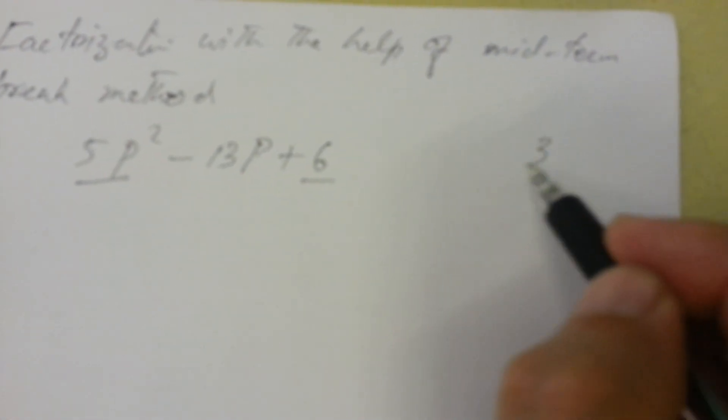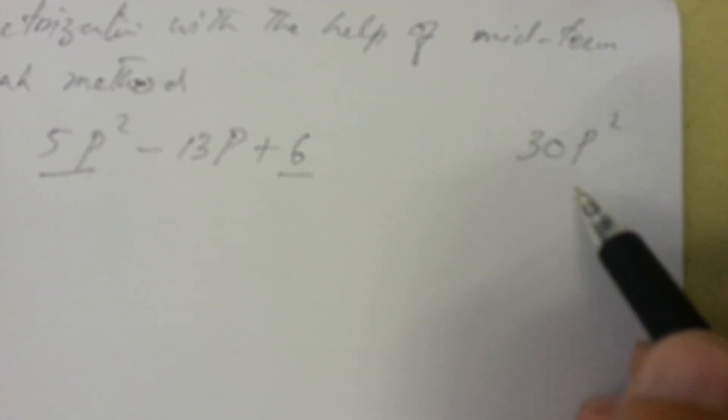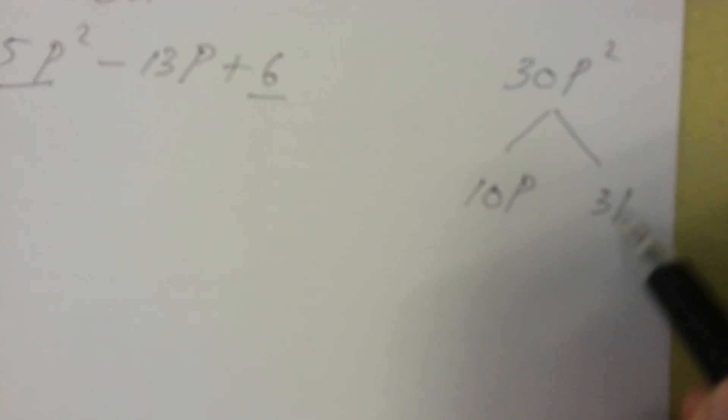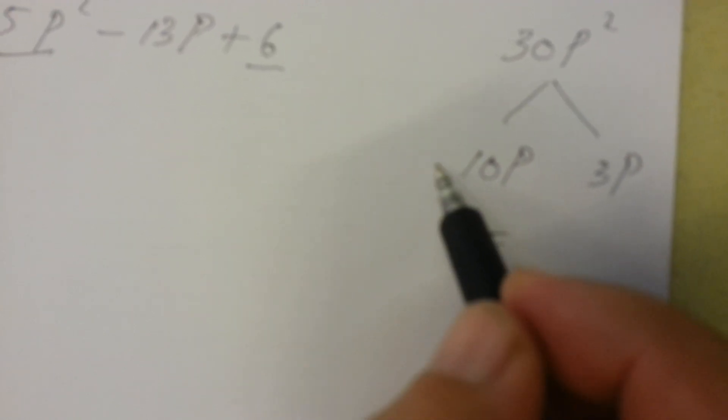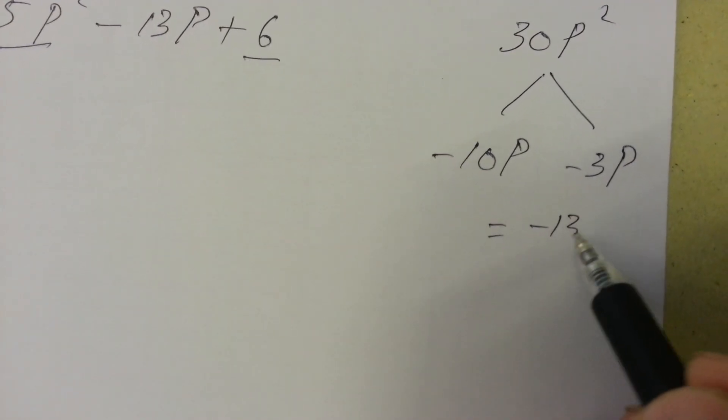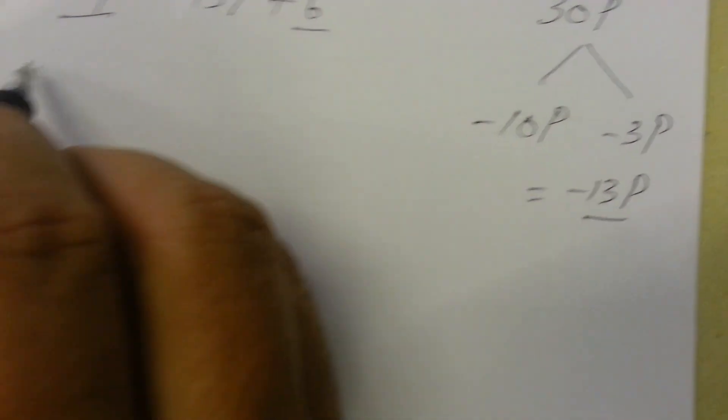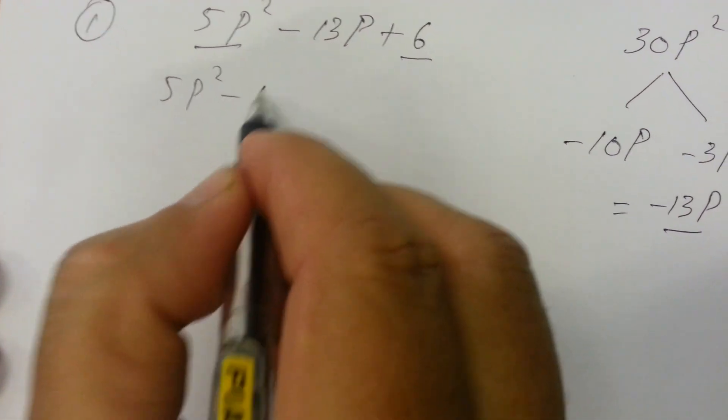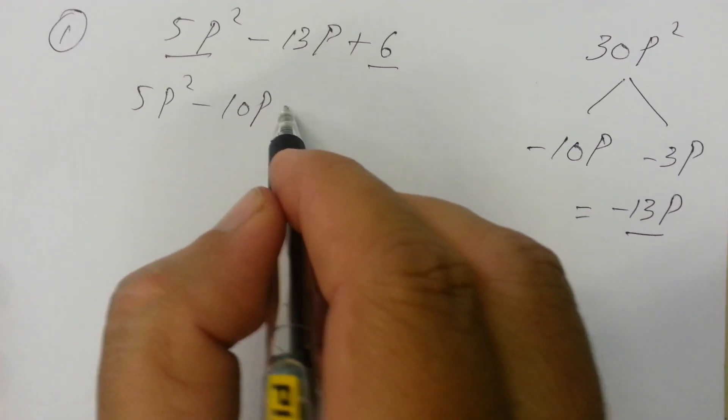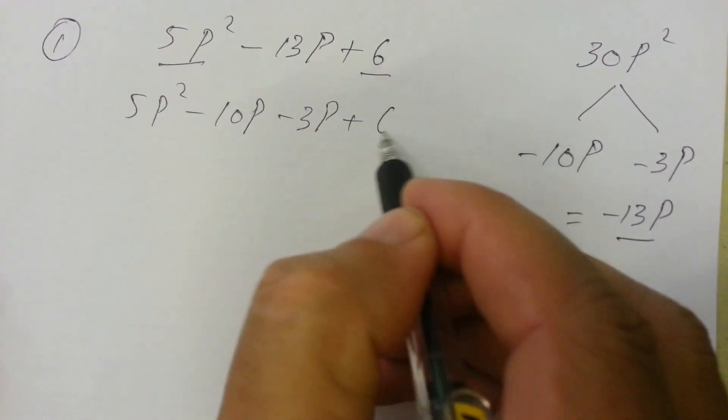Now we have to split into two terms which will be 10p and 3p, because we want -13p on addition. There will be 5p² - 10p - 3p + 6.